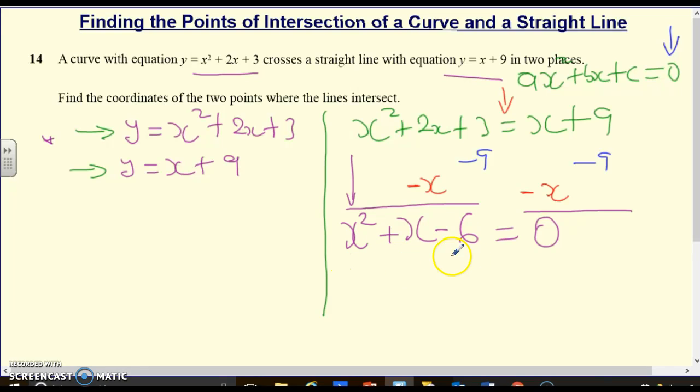So, we want to think of, at this stage, 2 numbers whose product will give us negative 6 but whose sum will give us the coefficient of this x which, obviously, is 1. So, what 2 numbers can you think of?